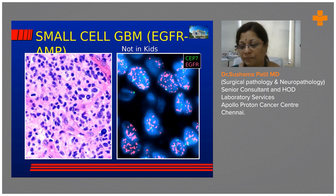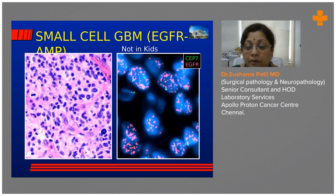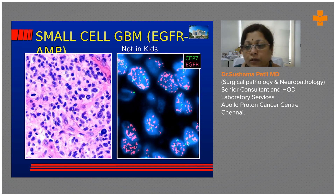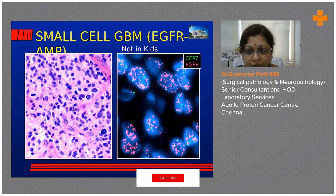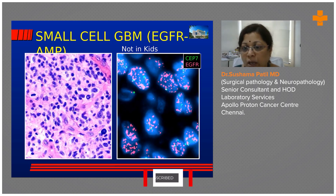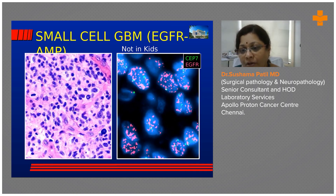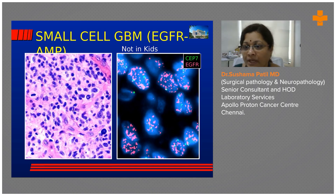Each CEP probe is chromosome-specific. In this case, we use the chromosome 7 centromere probe as reference. Normal dosage is two signals — one pair of chromosome 7 — so you should see only two green signals. But when you start seeing more than two signals, we are dealing with trisomy, tetrasomy, or polysomy.